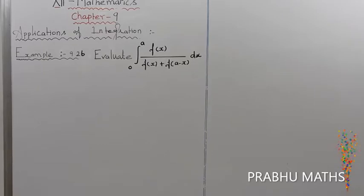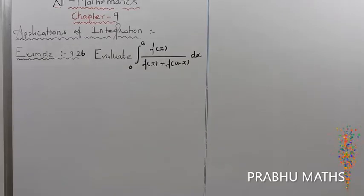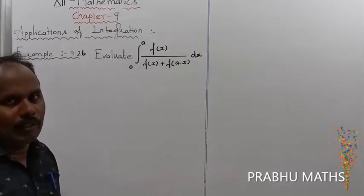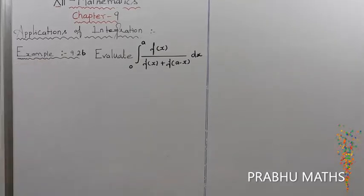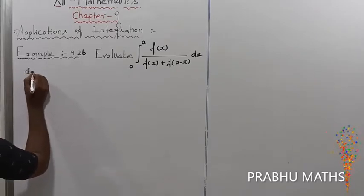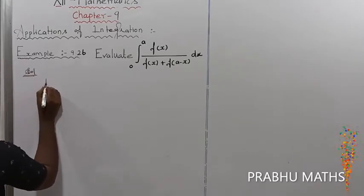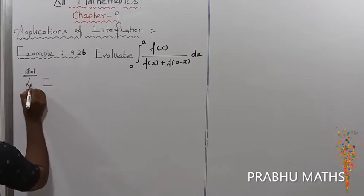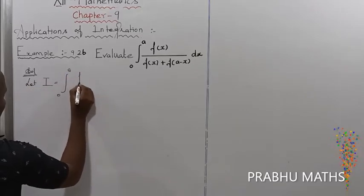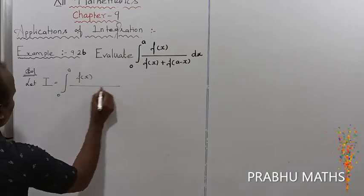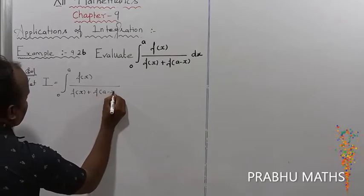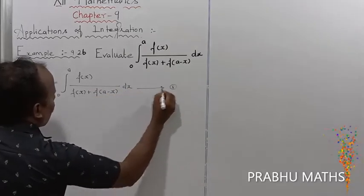Example 9.260: Evaluate the integral from 0 to a of f(x) divided by [f(x) plus f(a minus x)] dx. For this problem the solution is very easy. Let us consider the given integral as i, that is equal to integral from 0 to a of f(x) divided by [f(x) plus f(a minus x)] dx. This is equation number 1.